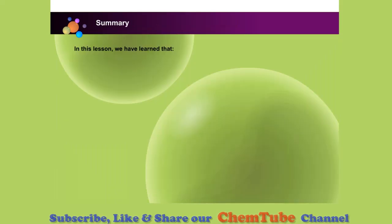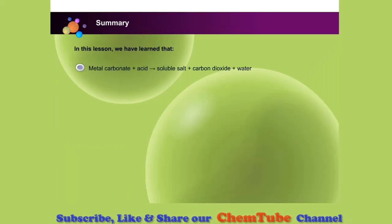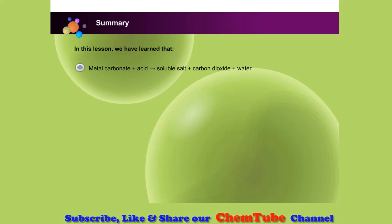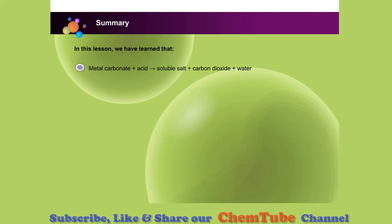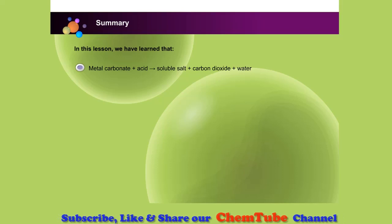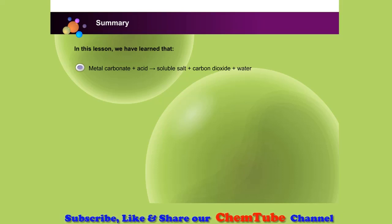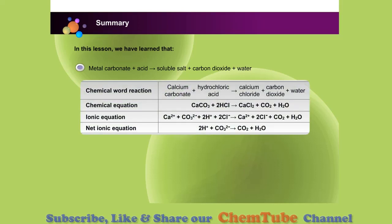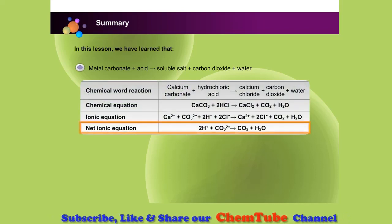In this lesson, we have learned that a soluble salt can be prepared through the reaction between a metal carbonate and an acid. When a metal carbonate reacts with an acid, soluble salts and carbon dioxide are produced. Carbon dioxide turns lime water chalky. The net ionic equation for soluble salts is shown in the table.